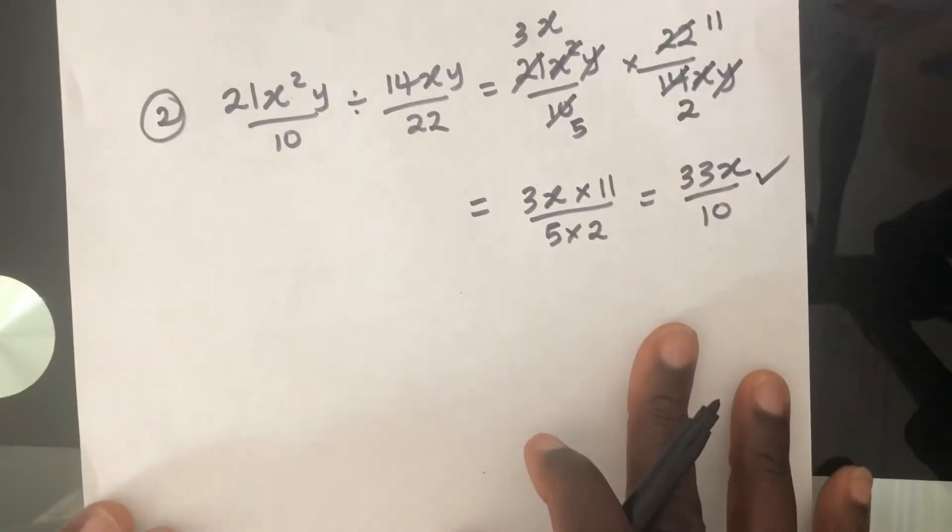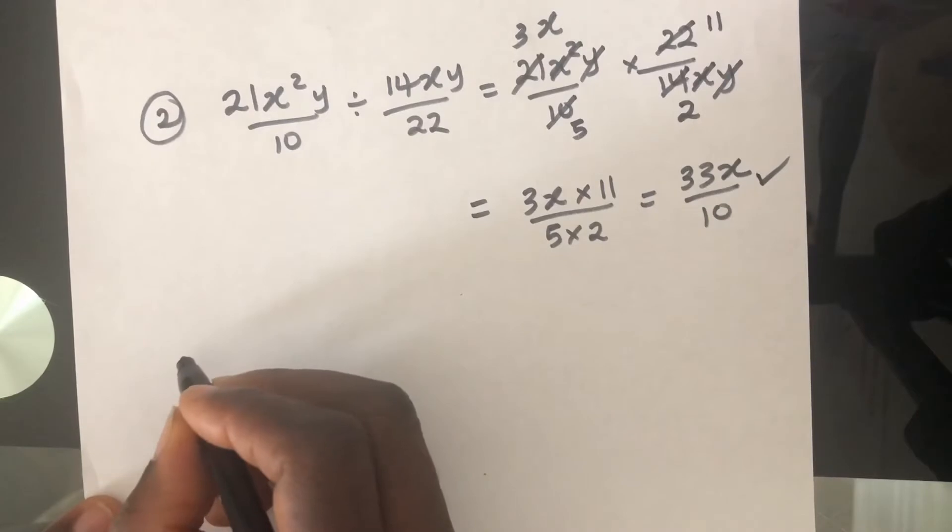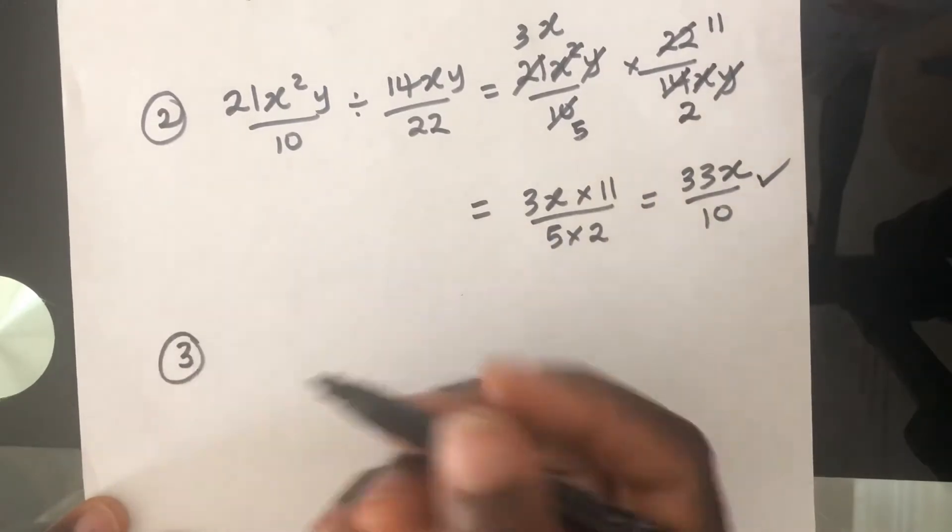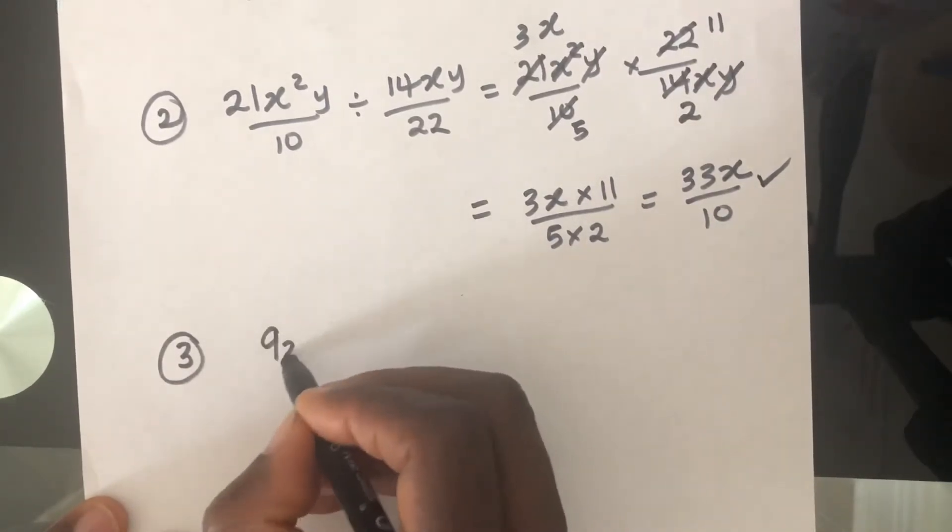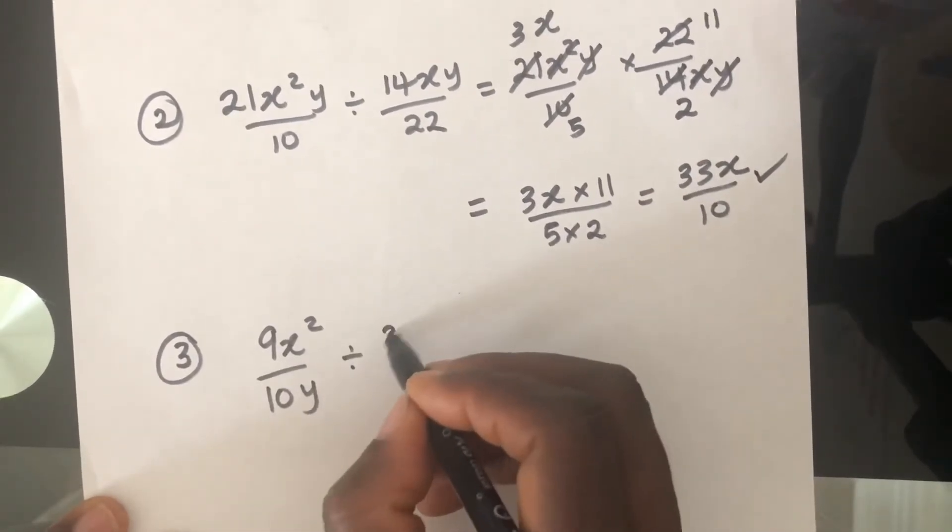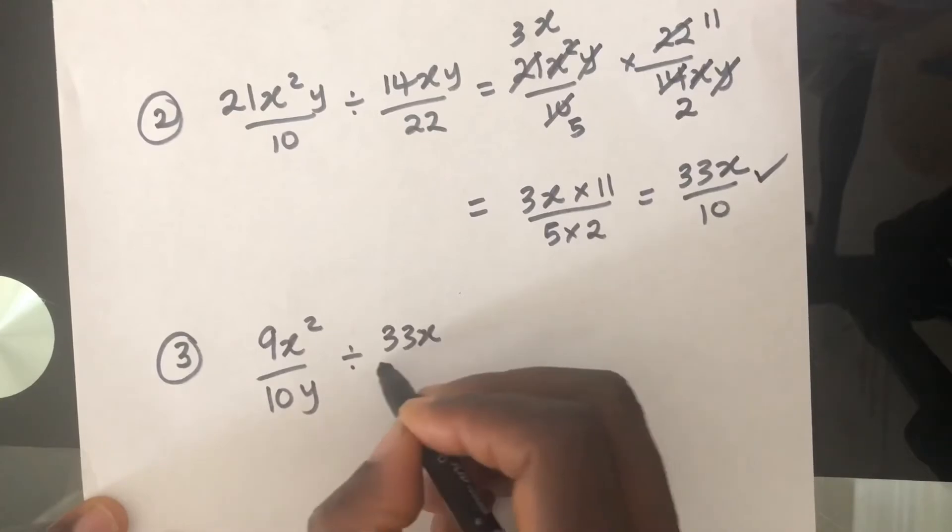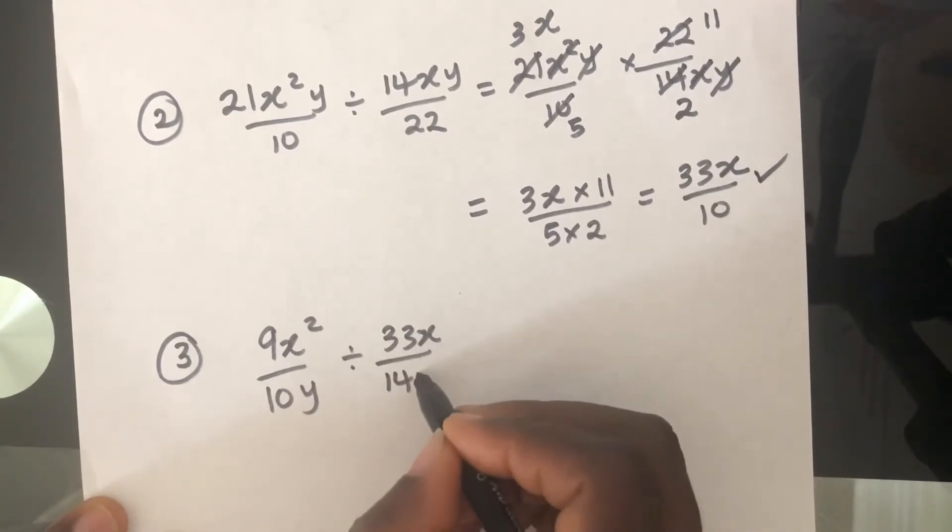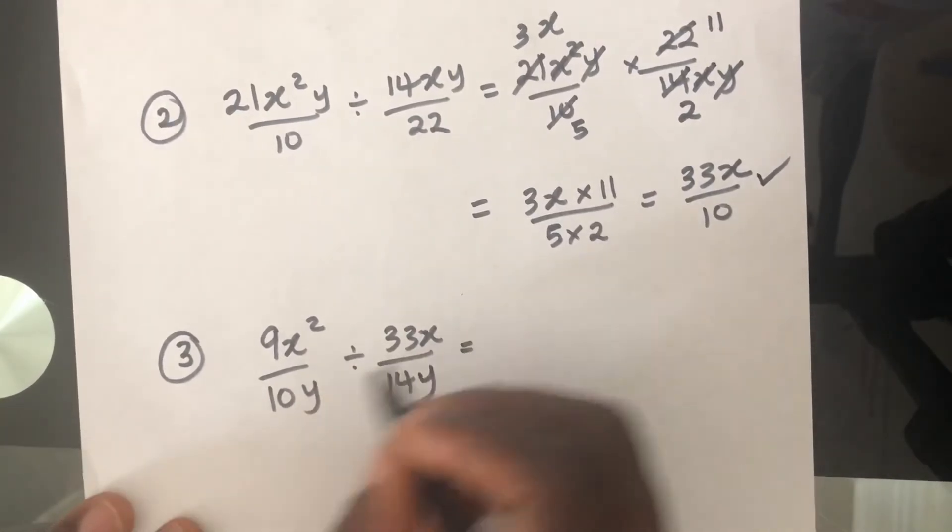Yeah. Should we do one more? One more example. Okay. Question 3. If we have 9X squared over 10Y divided by 33X over 14Y,